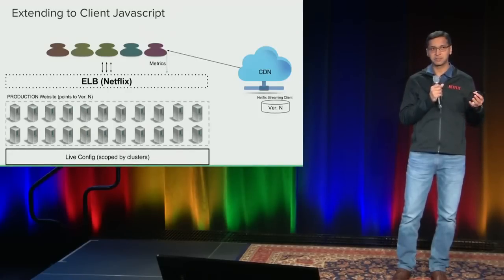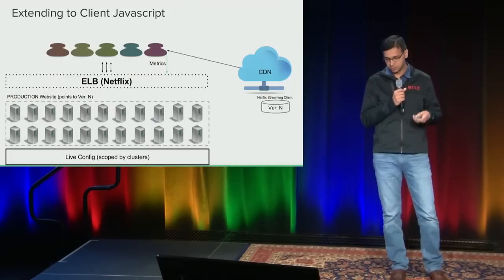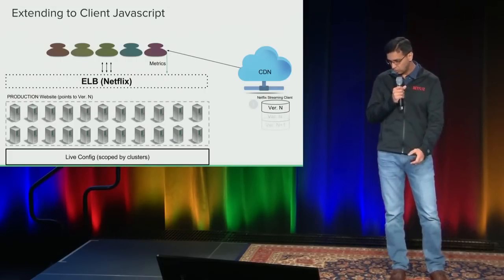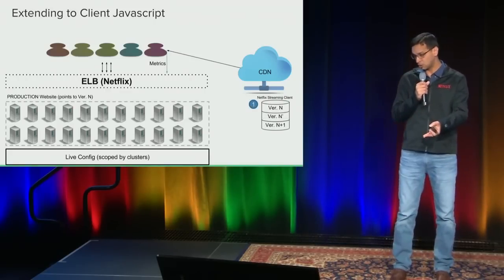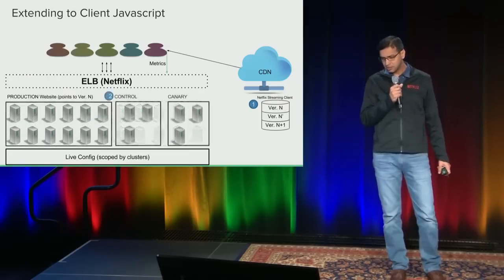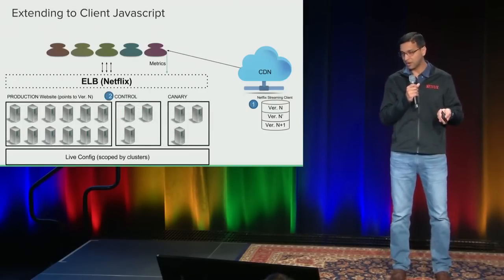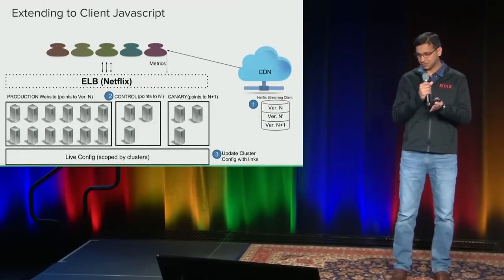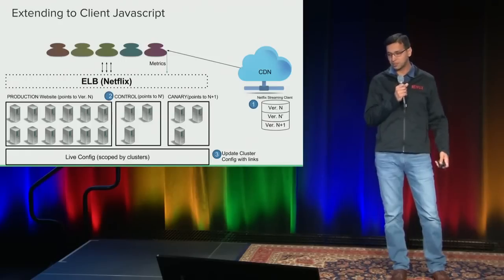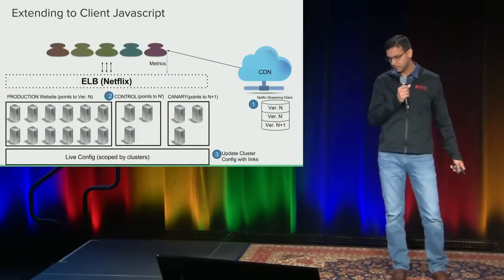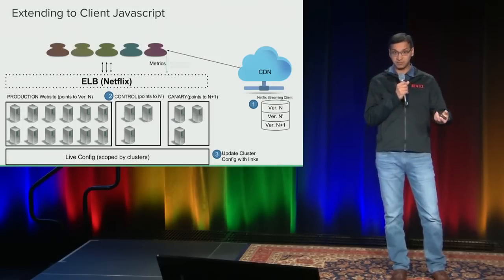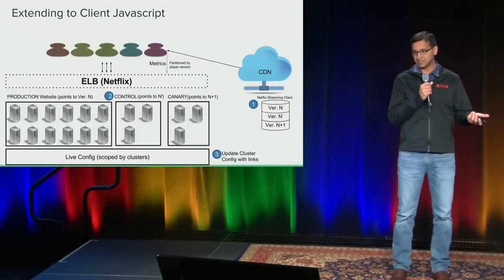When we started off, we decided to leverage the canary testing of our website, which runs on the production servers. We pushed the new version N+1 and a variant of the existing version N-prime onto the CDN, then used the canary and control clusters of our website to point to these new instances. The ELB would split traffic depending on the ratio of server instances in each cluster. Unfortunately, we didn't have many server instances to dedicate for canary and control, so we received about 1% of traffic for the new version of the player. Users would then report stats partitioned by player version.